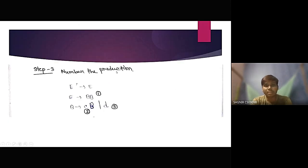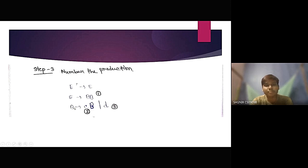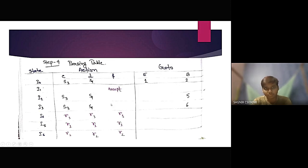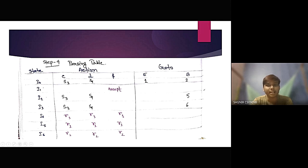Now we have numbered the productions. E' produces E is the augmented grammar, so we will not give it any number. E produces BB is our first production, B produces CB is the second production, and D is our third production. In step 4, it is the parsing table, where we define state, action, and go-to.